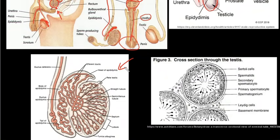This is a cross-section of the testis. The seminiferous tubules are where sperm production actually happens — the cross-section of the seminiferous tubule shows where sperm are produced, which we'll look at in spermatogenesis. Once produced, sperm move into the epididymis, which has long tubes where they grow and mature. From there, when ready to be ejaculated, they travel up through the vas deferens with peristaltic movements.